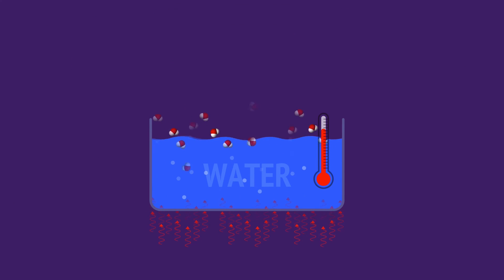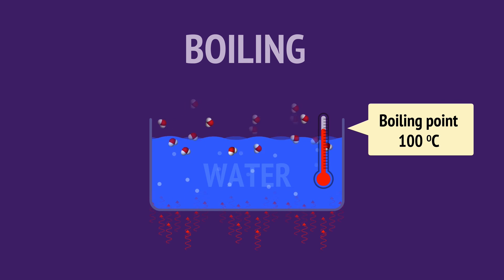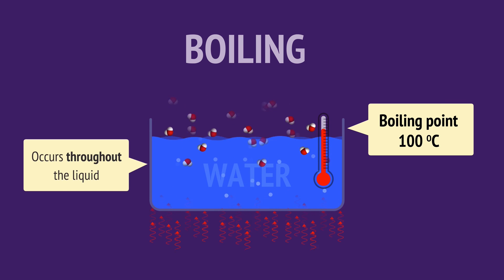Vaporization can occur rapidly when all the particles in the liquid have enough energy to become gaseous. We call this boiling, and it occurs when the liquid's temperature reaches its boiling point, like this water boiling at 100 degrees Celsius. Boiling is a rapid process that occurs throughout the liquid, as seen by the bubbles that form.